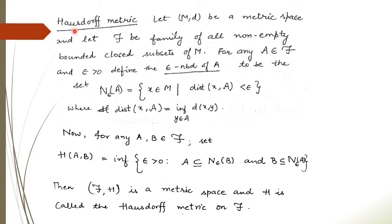Next, we define the Hausdorff metric space. Let (m, d) be any metric space with the usual metric d, and let F be the family of all non-empty bounded closed subsets of m. For any A from this family and ε > 0, we define the ε-neighborhood of A as the set of all x belonging to m such that the distance of x from the set A is strictly less than ε.